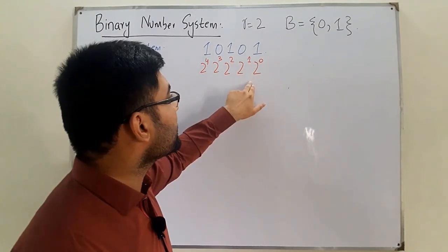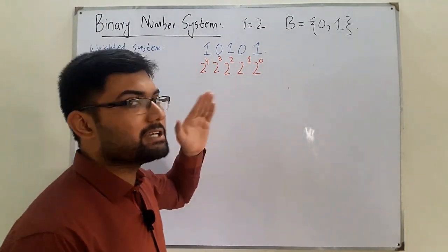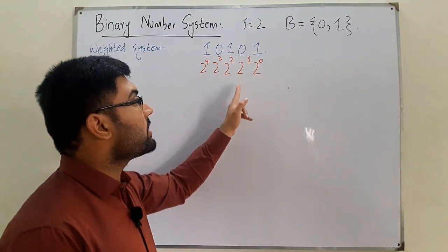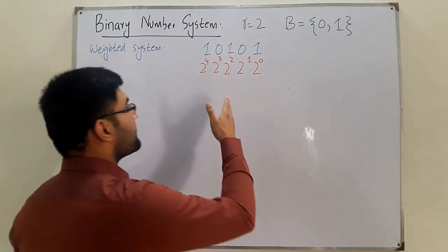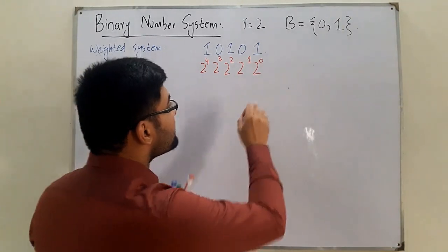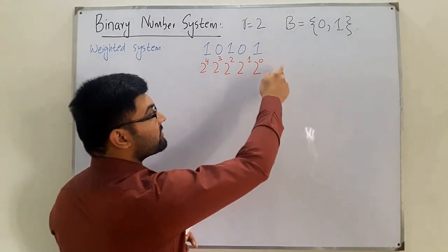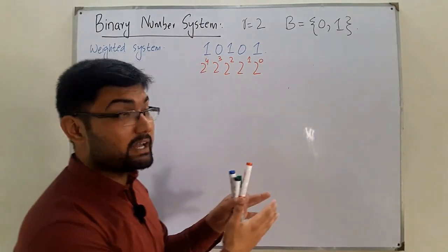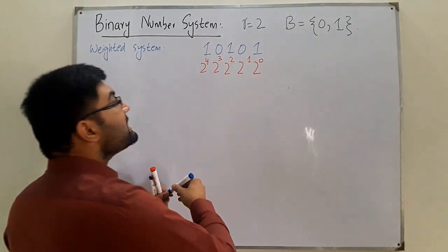Similarly, for every base R, you have weights R to the power 0, R to the power 1, and so on. For the octal system with base 8, the weights are 8 to the power 0, 8 to the power 1, 8 to the power 2, and so on. For base 2, the weights are 2 to the power 0, 2 to the power 1, and so on. If there is a decimal point, we go to negative powers.